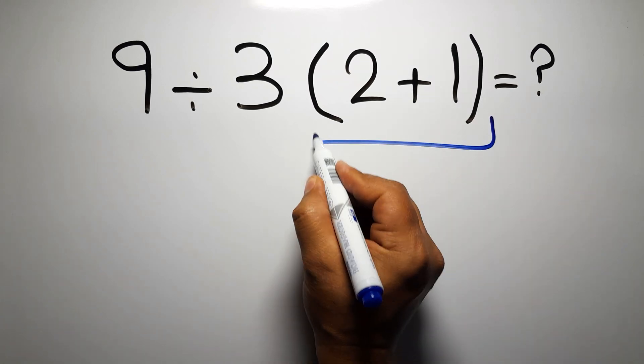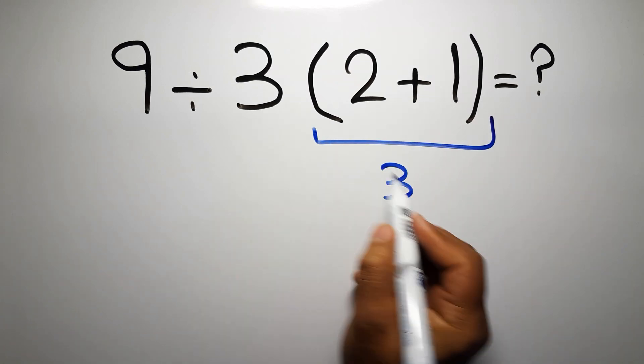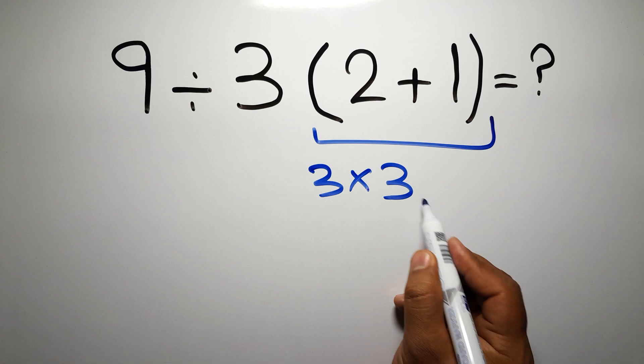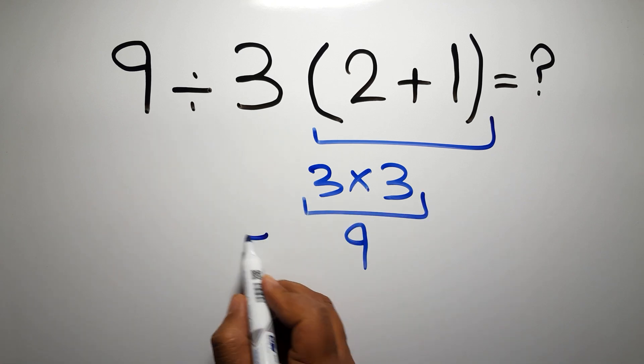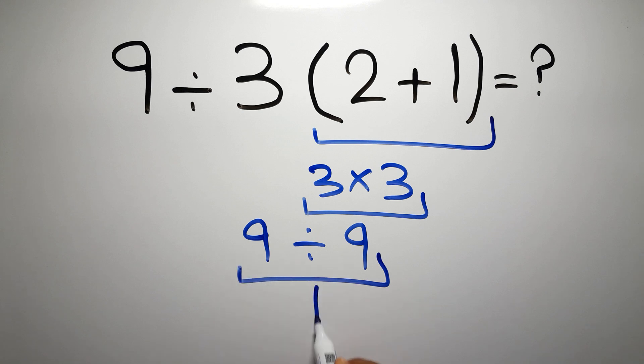2 plus 1 gives us 3, and 3 times 3 is just 9, so 9 divided by this, 9 divided by 9 gives us 1.